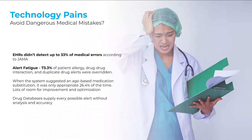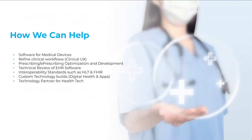It's not a flaw in a single system — every single EHR has this problem, because many interactions aren't clinically significant and doctors have seen them frequently. The most common reasons given for overriding an alert are 'will monitor' or 'patient has tolerated before.' For example, when the system suggests an age-based medication substitution, that's only appropriate about a quarter of the time. There is lots of room for improvement and optimization.